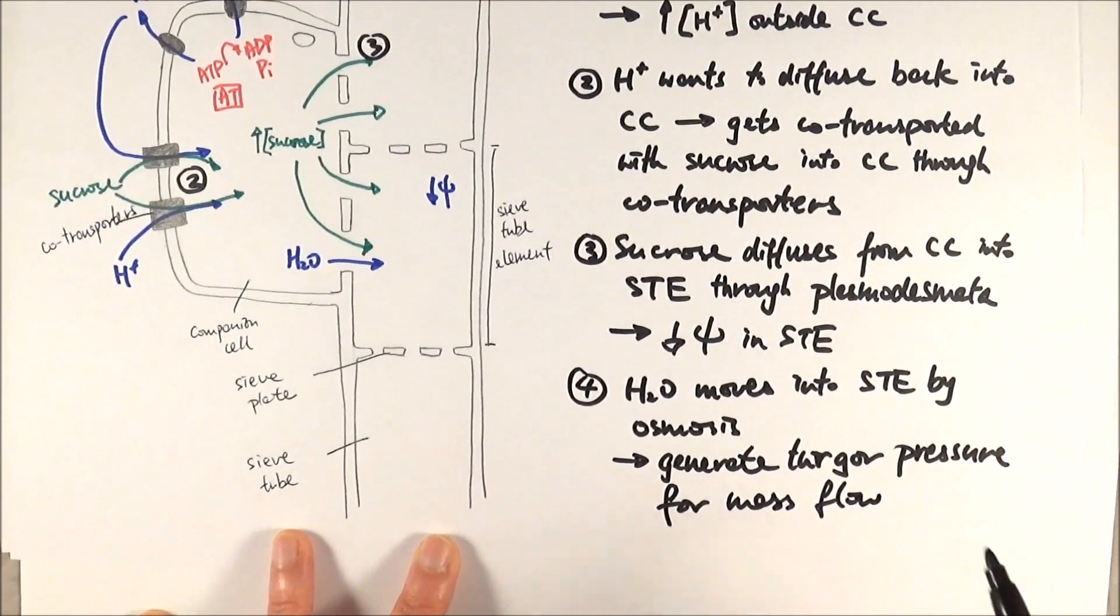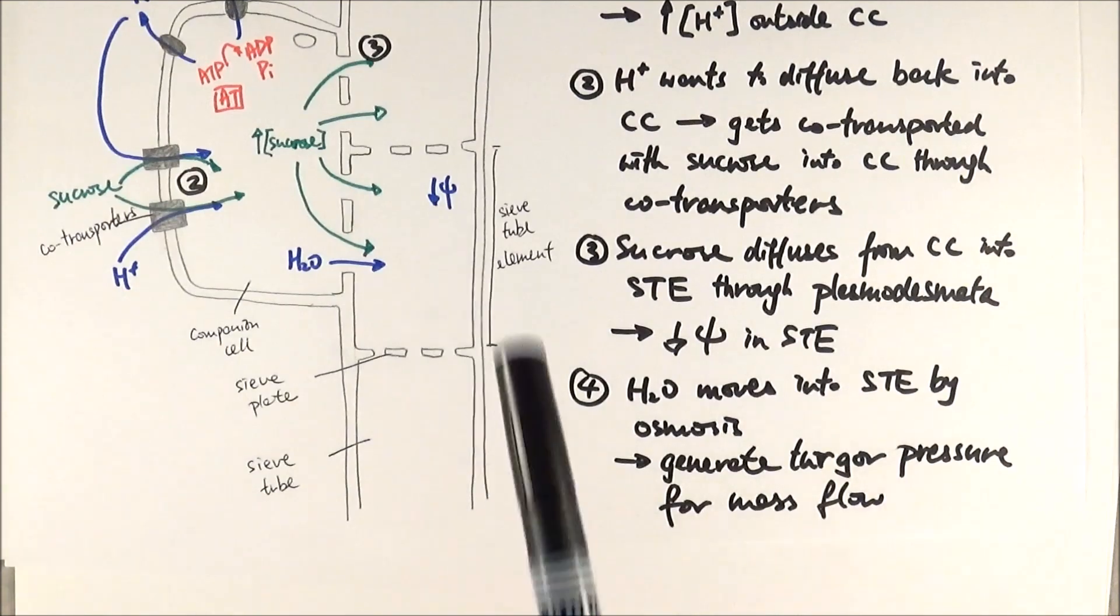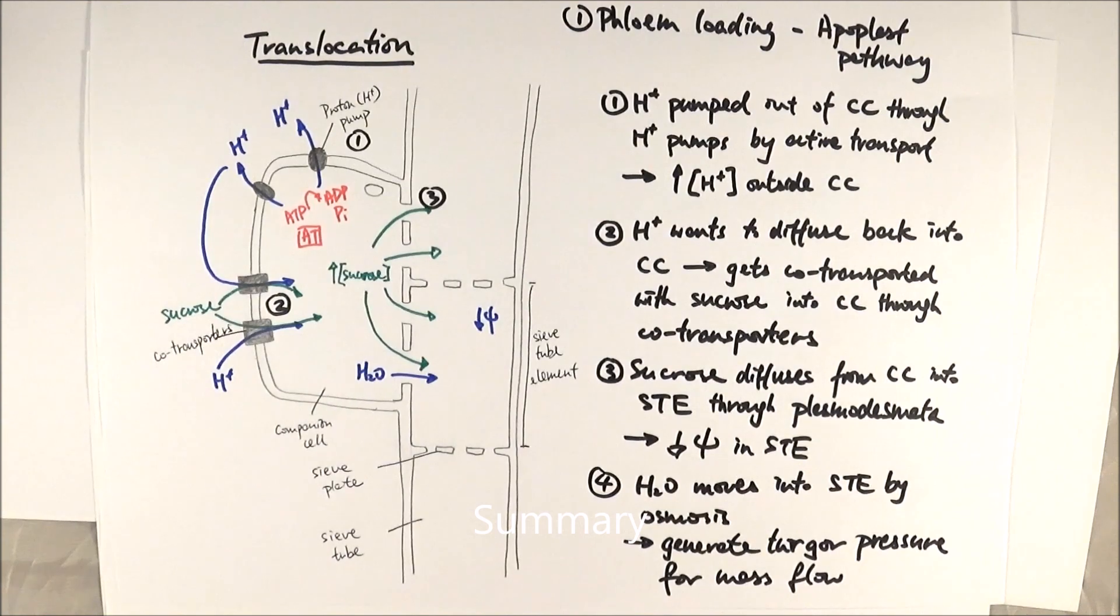With this turgor pressure, we can allow mass flow to happen, which is the second step, referring to the movement of assimilates to different places along the phloem. And there you have it - that is translocation. So a very quick recap.